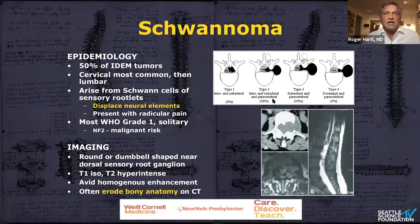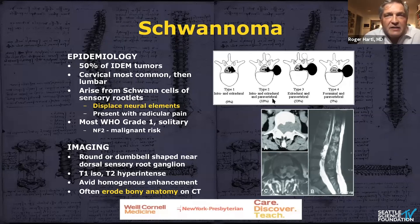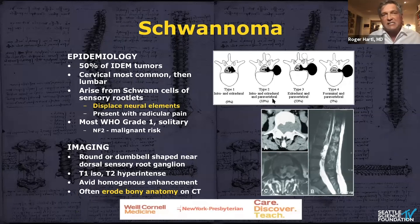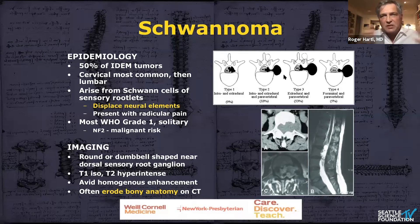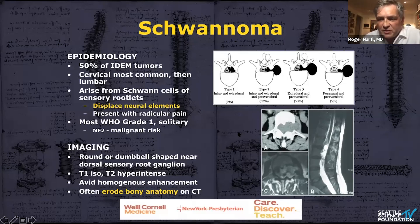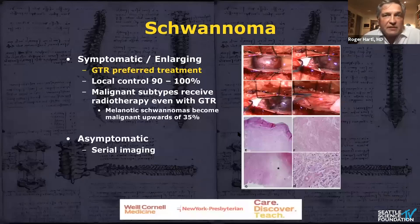Probably among the most common tumors are schwannomas — about 50% of intradural extramedullary tumors, primarily in the cervical spine but also lumbar. They arise from sensory nerve roots and therefore present primarily with radicular pain, though they can displace neurological elements and cause neurological deficits. Most are low-grade. Very typically, you see the dumbbell shape configuration — they can grow into the spinal canal and outside it, and over time will displace bone. On CT scan you can see that these tumors slowly erode and change the bony anatomy in that region, which can help with the diagnosis and may be relevant for surgical treatment.